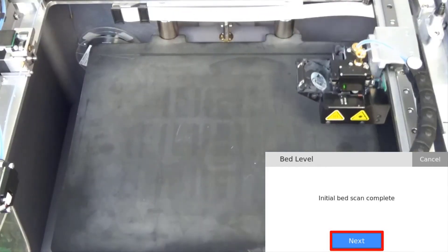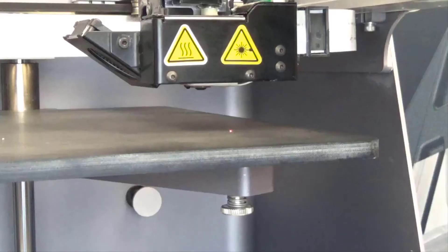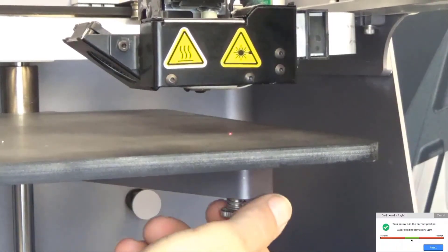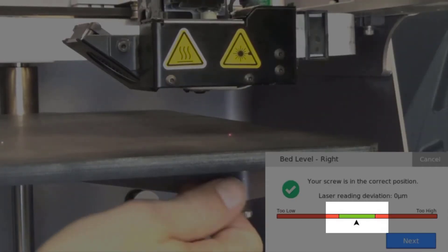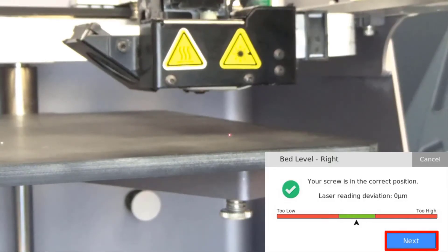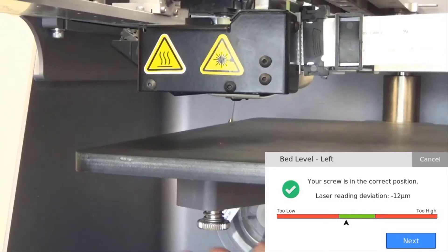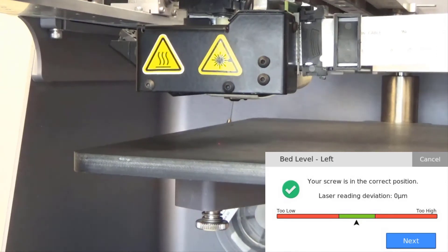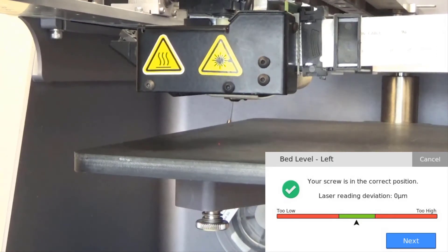Once the scan is complete, press next. We will then adjust the first thumbscrew such that the arrow on the screen is in the green region of the laser reading bar, just like the first one, and then press next.